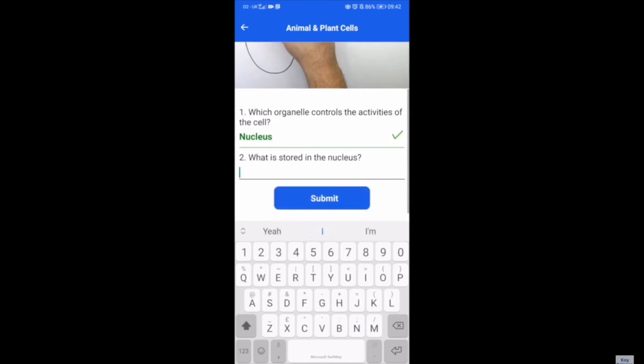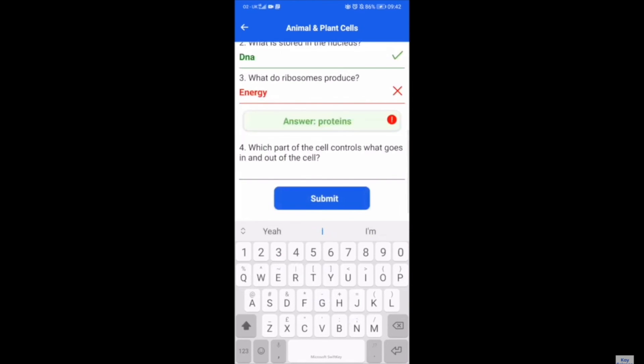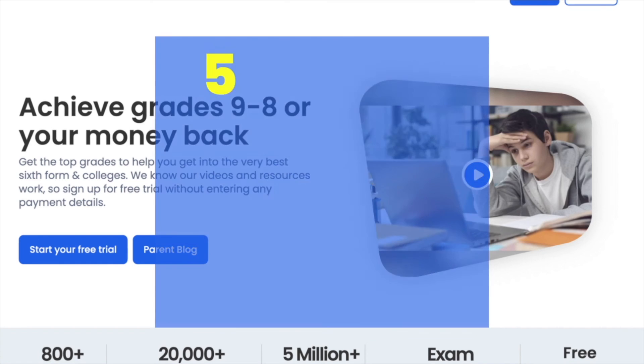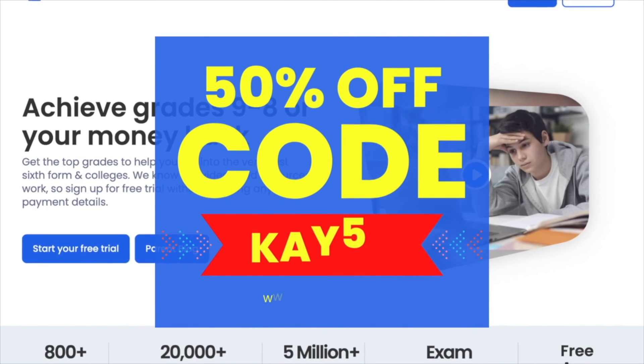I've also got the kscience app for Android and Apple so the kids can do all their work on their phones. So there's no need for access to computers. So achieve a grade 8 or 9 at kscience.com.